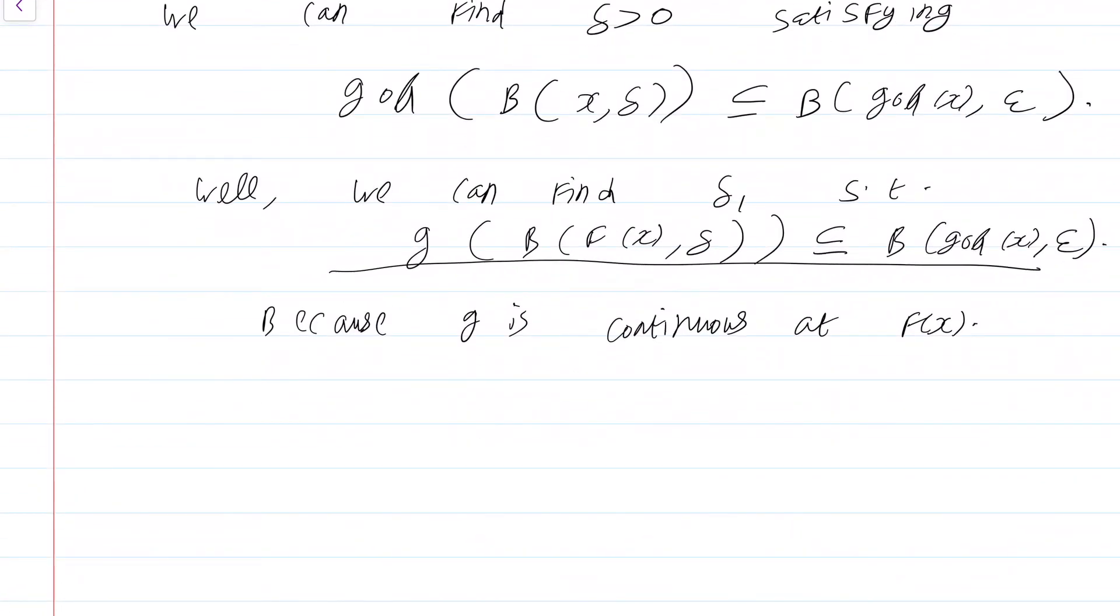Now we can find delta greater than 0 such that f(B(x, δ)) is fully contained in B(f(x), δ₁). Because f is continuous at x.